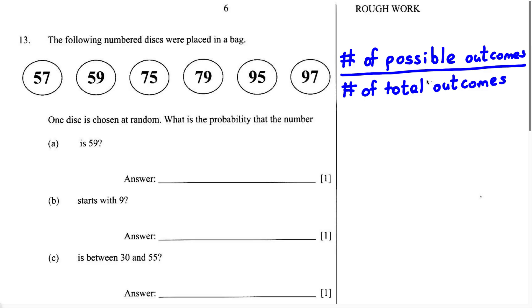Using this information, let's look at part A. They want us to find the probability that the number we chose is 59. The first thing we do is find the number of total outcomes by counting all the discs — we have 6 total, so that goes in the denominator. For the number 59, we can see that number only appears one time, so we write 1 in the numerator. Therefore, the probability of choosing 59 is 1 over 6.